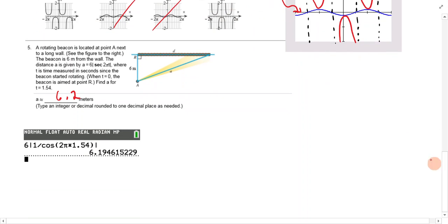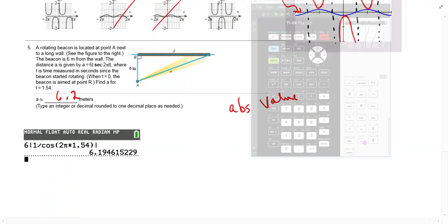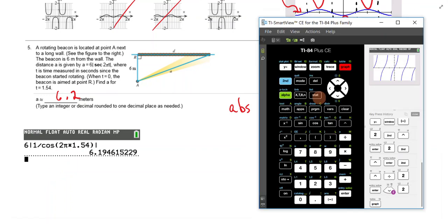Number five, this is a short section. We have that rotating beacon question again. And it says find for time is 1.54. So six, absolute value, absolute value. And let me show you where you can get absolute value. If you go to math and over to number, the very first option is abs.